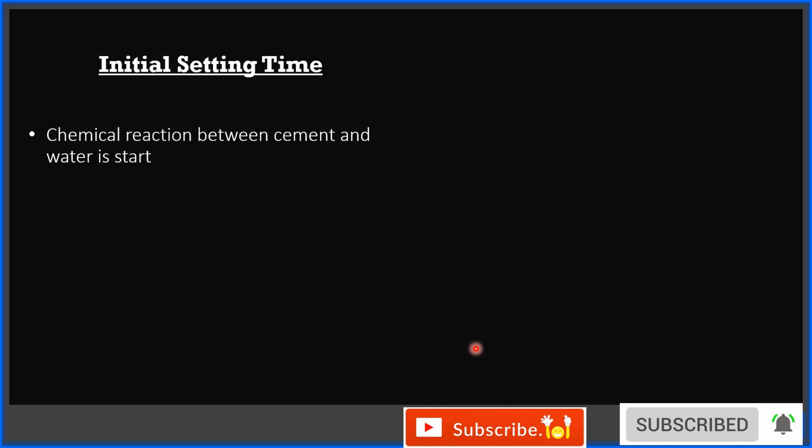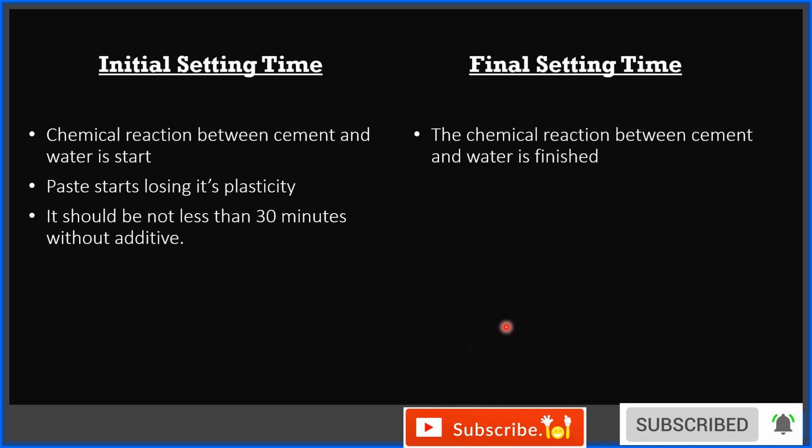So here's the summary. Initial setting time indicates the starting time of chemical reaction and the time when paste loses its plasticity. On the other hand, final setting time indicates the chemical reaction between cement and water is finished and the time when cement completely loses its plasticity and becomes hard. Initial setting time for OPC cement should not be less than 30 minutes, and final setting time for OPC cement is maximum 600 minutes.